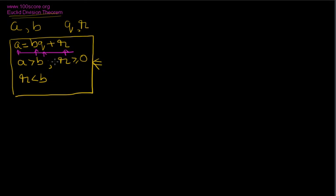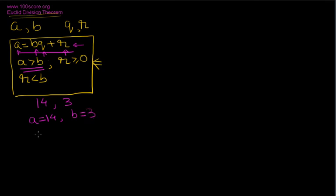Let's take a couple of examples to prove that every number can be represented in this format. Let's take any two numbers — 14 and 3. The first step is to find out what is A and what is B. As per the theorem, A has to be greater than B, so we assign A equal to 14 and B equal to 3. The next step is to find Q and R by dividing A by B.